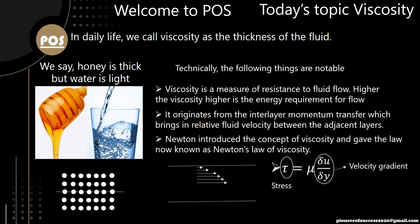Now let us discuss Newton's law of viscosity. It tells the stress on a fluid is proportional to the velocity gradient. So whenever a fluid flows, a velocity gradient exists. A velocity gradient means, in normal language, the velocity at all the layers are not similar when fluid flows.